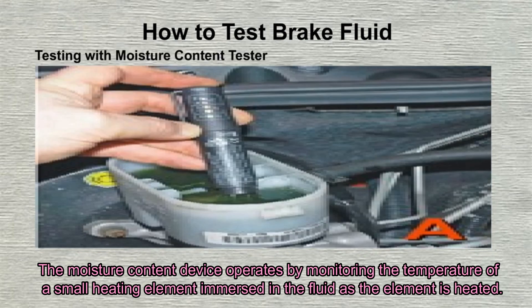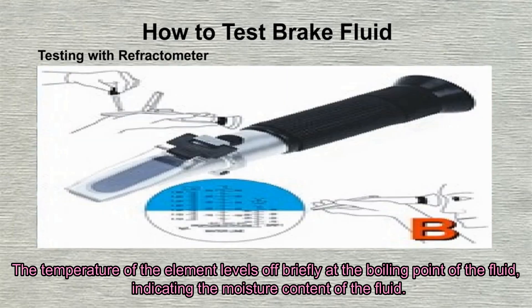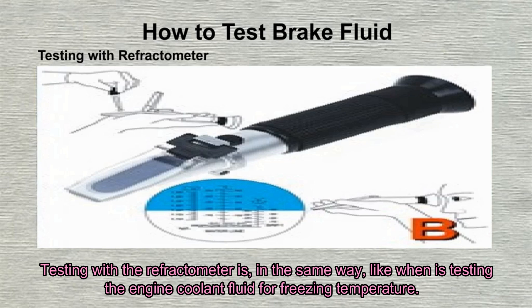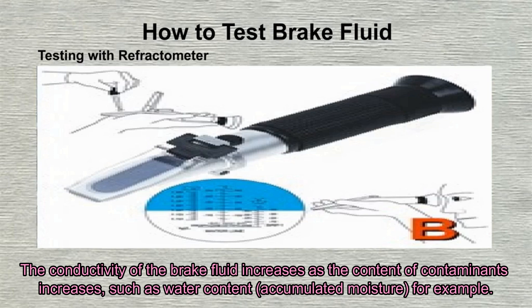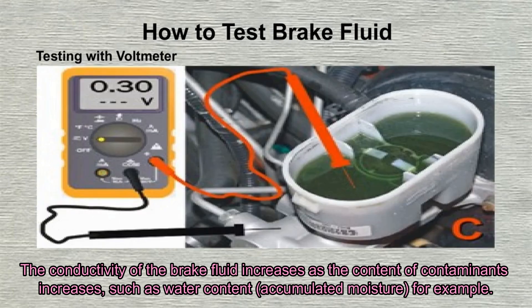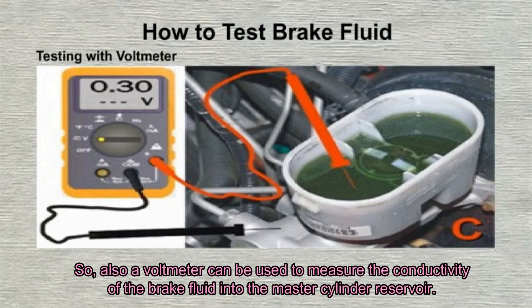The moisture content device operates by monitoring the temperature of a small heating element immersed in the fluid as the element is heated. The temperature of the element levels off briefly at the boiling point of the fluid, indicating the moisture content. Testing with the refractometer is done in the same way as when testing engine coolant for freezing temperature — get a sample of the fluid and make a reading. The conductivity of the brake fluid increases as the content of contaminants, such as water, increases.